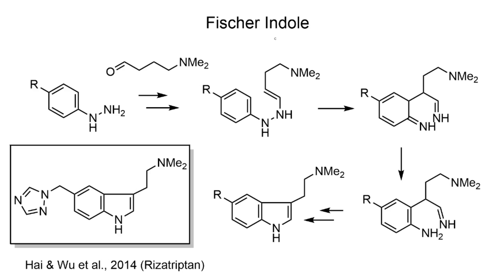People have also used the classical Fischer indole synthesis to make tryptamines. Here, the starting material is a phenylhydrazine and the same long-chain aldehyde as before. The first step is condensation to form an enamine, and then the key step is a sigmatropic rearrangement — an electrocyclic process — that forms the new carbon–carbon bond, affording a pair of imines. Loss of a proton restores aromaticity, and then the aniline-type nitrogen condenses with the adjacent amine; following the arrows through completes the Fischer indole synthesis. This was used to prepare the drug rizatriptan.